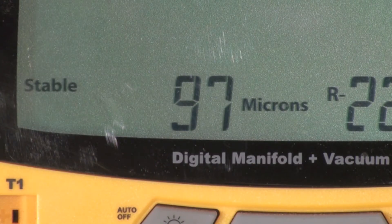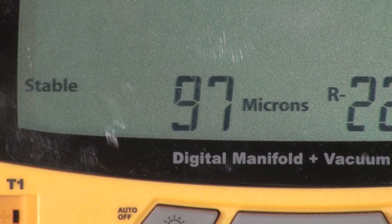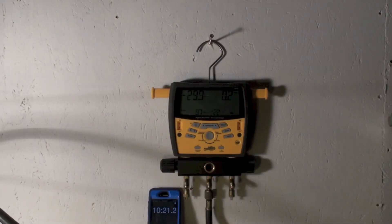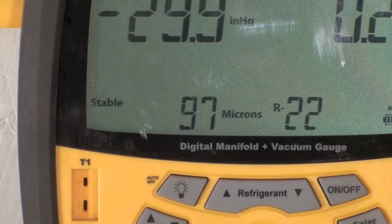Looks like we're pretty much settling out about 96 or 97 on the microns. About 10 minutes. So it looks like 97 microns is about what we're going to get in 10 minutes. And it's pretty stable.